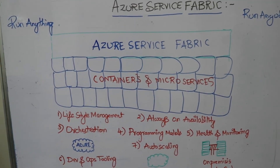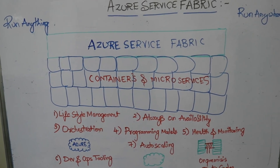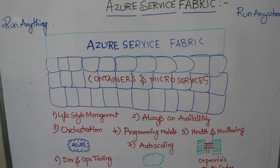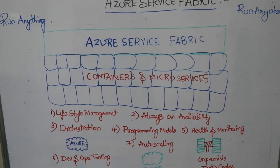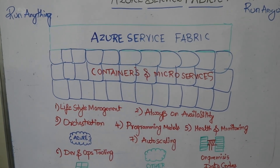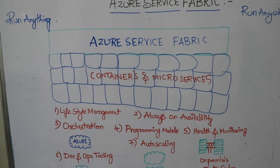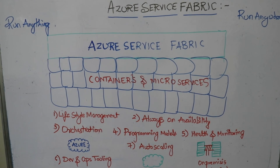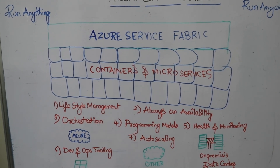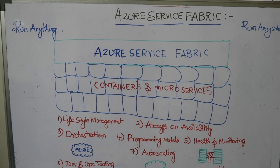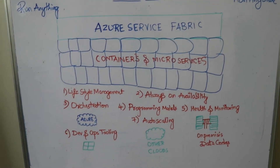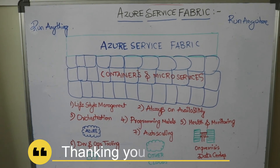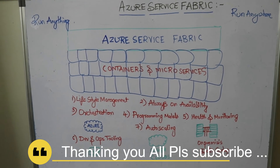You can run anything, you can run anywhere. Run anywhere means you can operate this with Windows, Linux, Ubuntu operating systems. You can run any sort of programming model — there is nothing like a restriction that only a particular programming model is used. There are plenty of options available. This is the Azure Service Fabric and all its different components. This is Sridharam Venkatesh, signing off. Thank you.